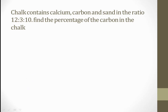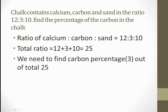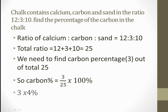A chalk contains calcium, carbon and sand in the ratio 12 is to 3 is to 10. Find the percentage of carbon in the chalk. Carbon is 3. The total ratio is 12 plus 3 plus 10, which equals 25. To find carbon percentage, I take 3 out of 25 and multiply by 100. 25 cancels with 100 to give 4. So 3 times 4 gives 12 percent. So 12 percent is the percentage of carbon.